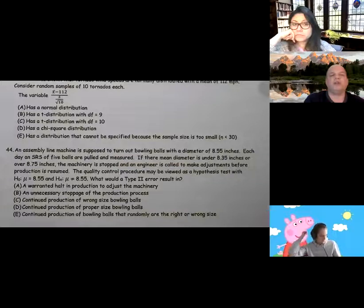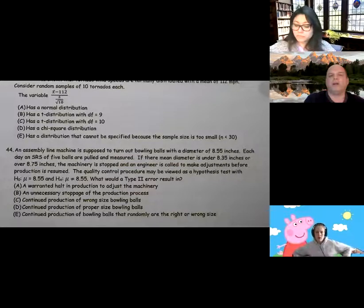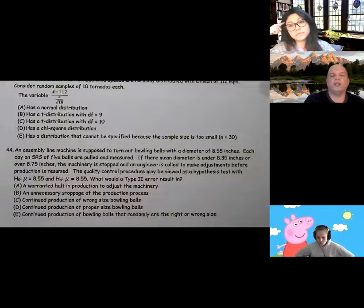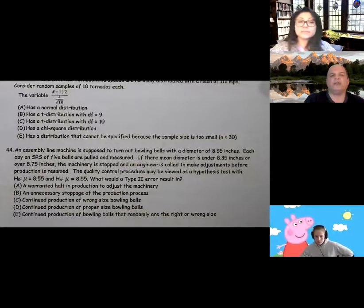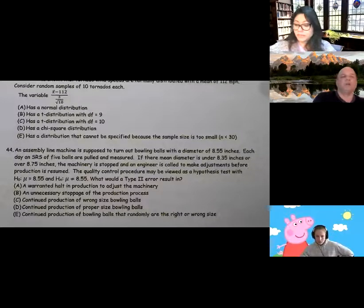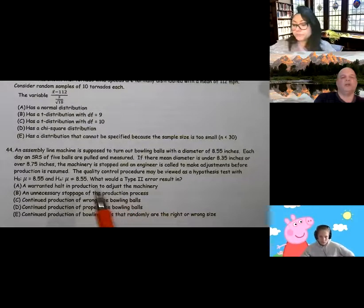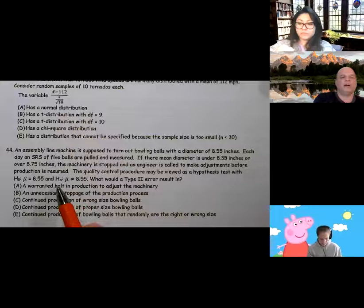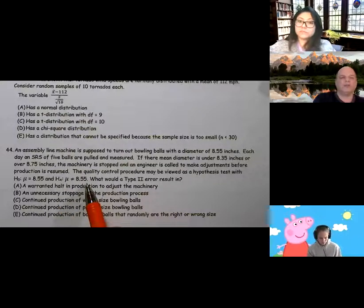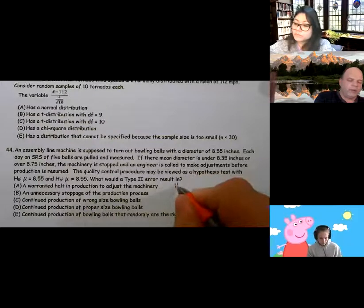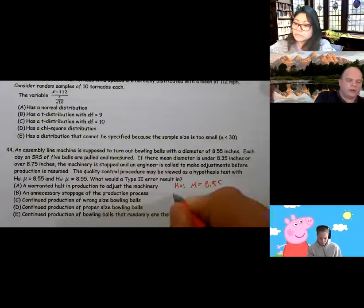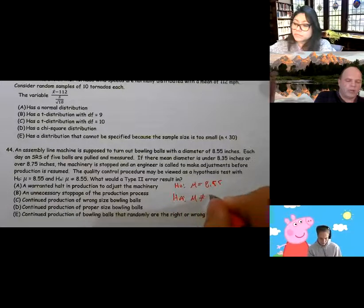An assembly line machine is supposed to turn out bowling balls with a diameter of 8.55 inches. Each day, a simple random sample of five balls are pulled and measured. If the mean diameter is under 8.35 or over 8.75, the machinery is stopped and an engineer is called to make adjustments before production is resumed. The quality control procedure may be viewed as a hypothesis test with mu equal 8.55 and alternative not equal. What is a Type 2 error? So we have, this is our null, mu is this value. The alternative mu does not equal that value.